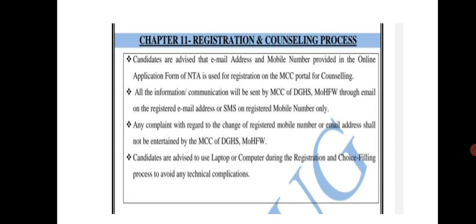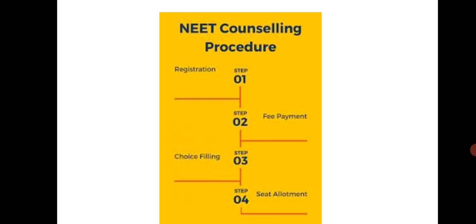Let us see the process of counselling. First, registration — provide basic information, then pay the fees. After that, wait for choice filling, where you select web options and fill in as many colleges as you want. After that, the seat allotment will be released.